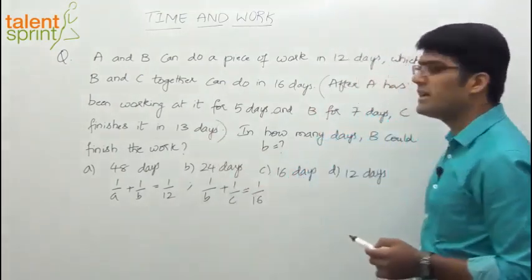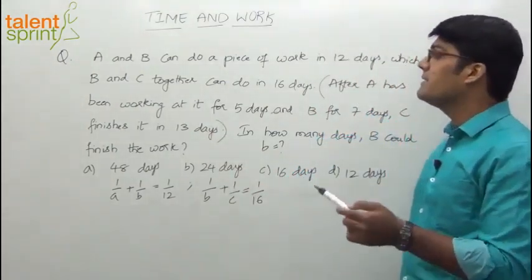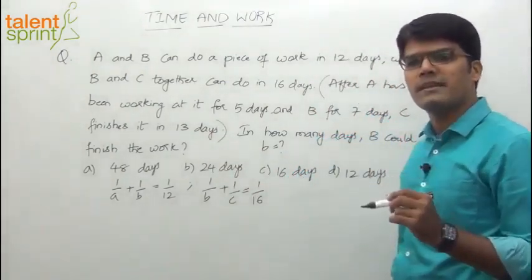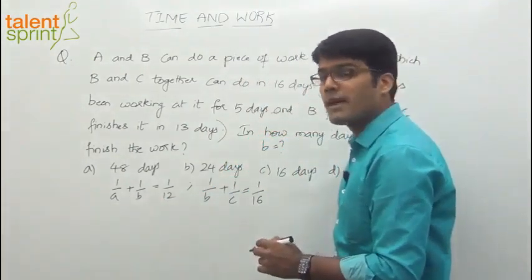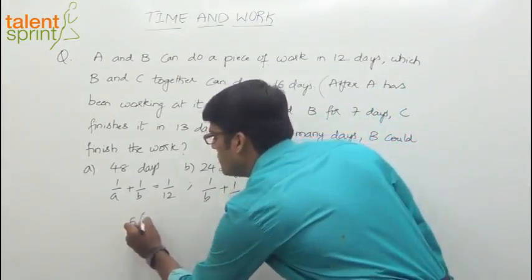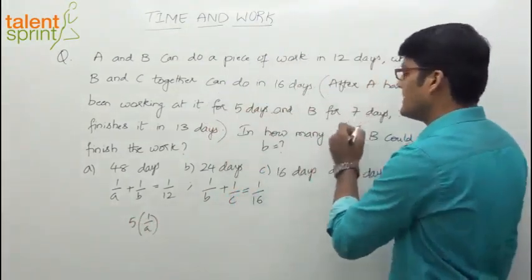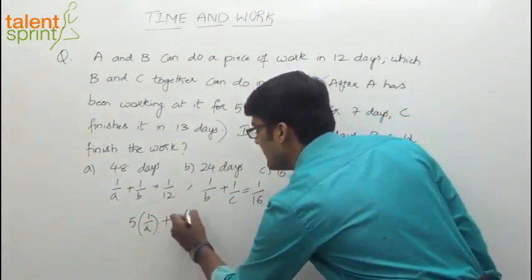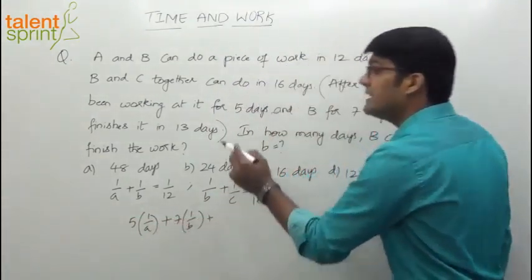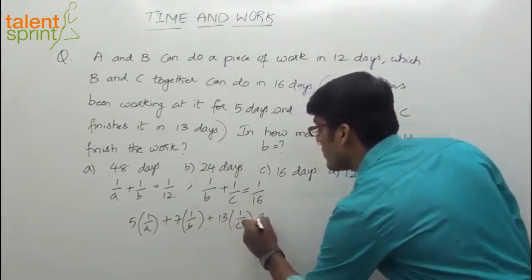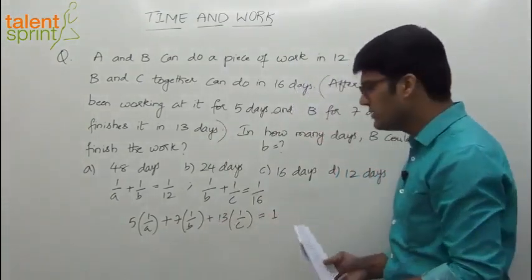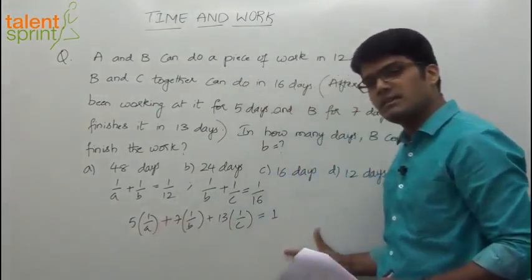In how many days can B alone finish the work? We need to find B. Now let's write an equation for this statement. After A has been working for 5 days, A has worked for 5 days. How much can A do in 1 day? 1 by A. He has worked for 5 days, so how much work will get done? 5 into 1 by A.